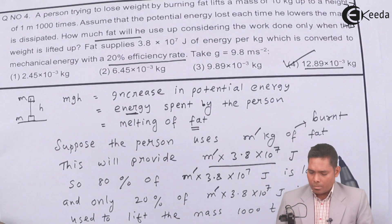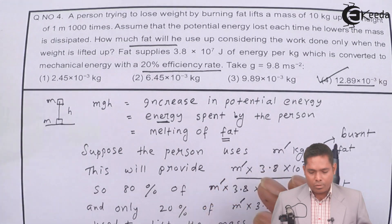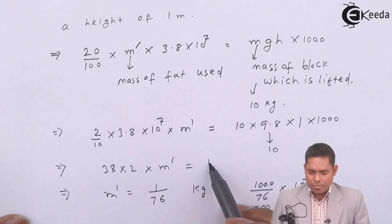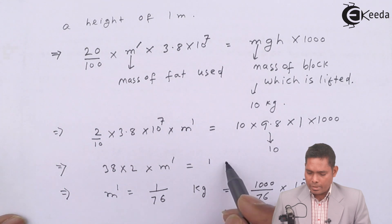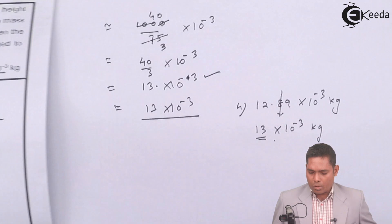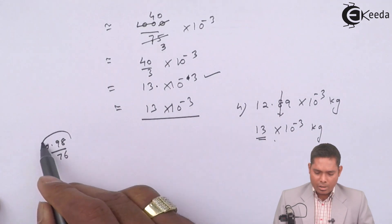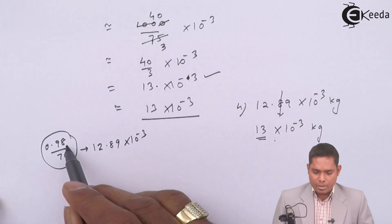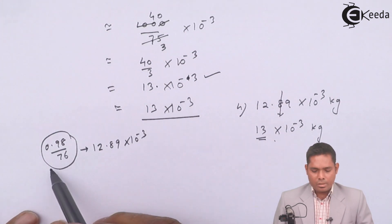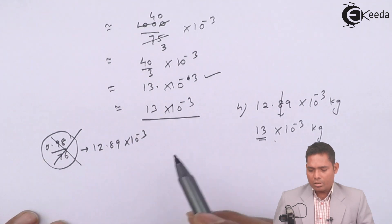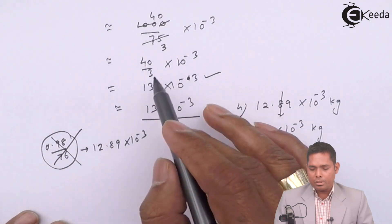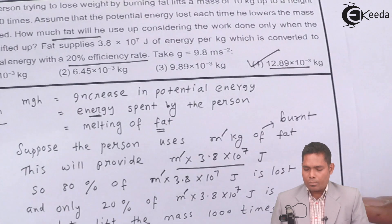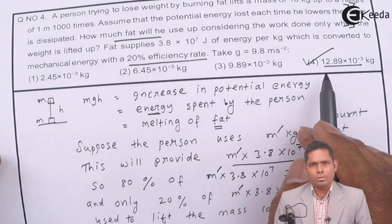Otherwise, what you would have done is you should have gone for this calculation of 9.8. Here, in place of 10, you should have gone for 0.98. It is 0.98 divided by 76. If you do that, you will get 12.89×10⁻³. But then, you can see, imagine how much time we will waste. So don't go for this type of calculations. Just solve it, manipulate this, and then also you will get the answer. This is the amount of fat that is used up. Therefore, option number 4 is the right option. Thank you.